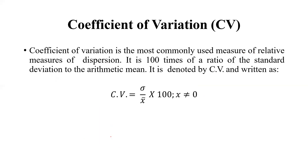Now the next point: we need to understand the coefficient of variation. The coefficient of variation is the most commonly used measure of relative dispersion. It is 100 times the ratio of the standard deviation to the arithmetic mean, and it is denoted by CV. We calculate it as: sigma divided by x-bar, multiplied by 100.